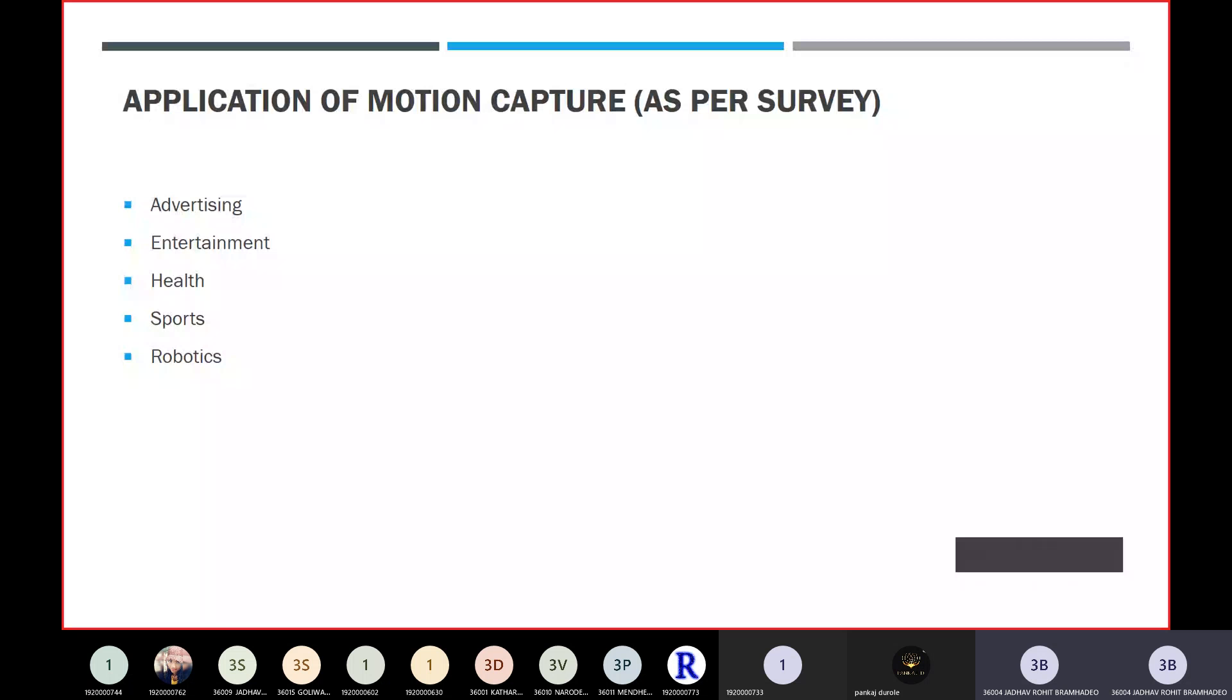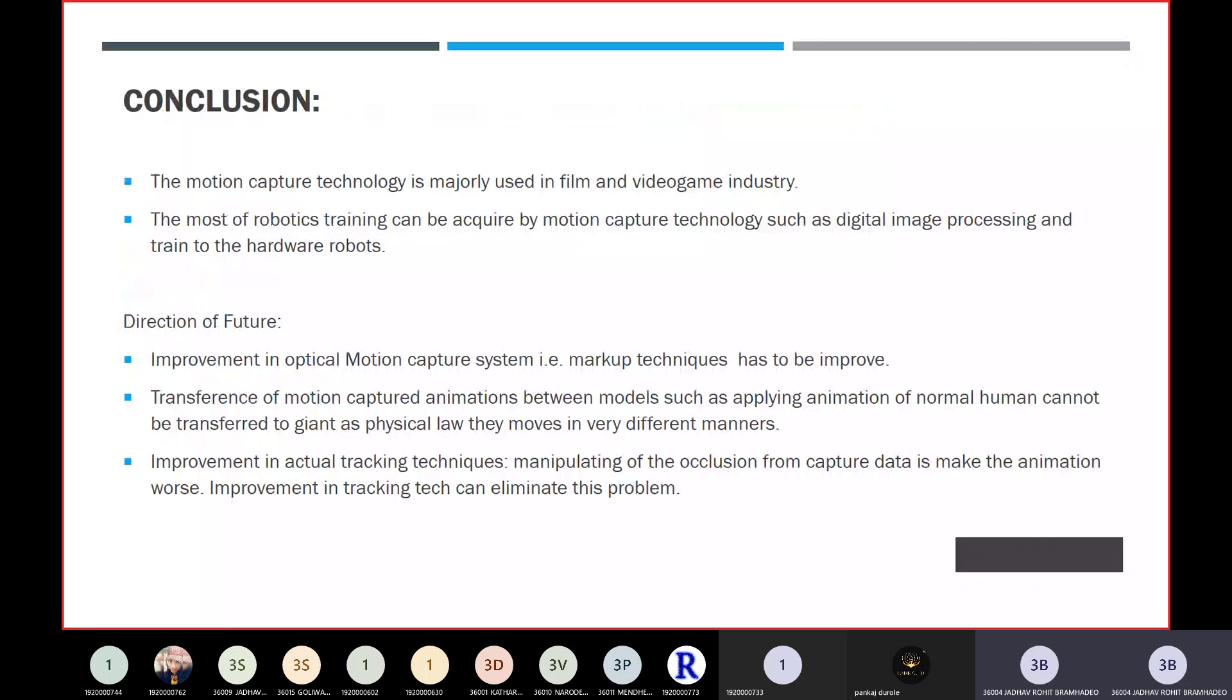In conclusion, motion capture technology is majorly used in film and videography industry. The most appropriate training can be acquired by motion capture technology, such as digital image processing and training hardware robots. Throughout the survey, people identified that motion capture technology is used mostly in video games and films, and it is used for digital imaging processing. Optical technology can identify people, their behavior and expressions, and can be used in robotics.